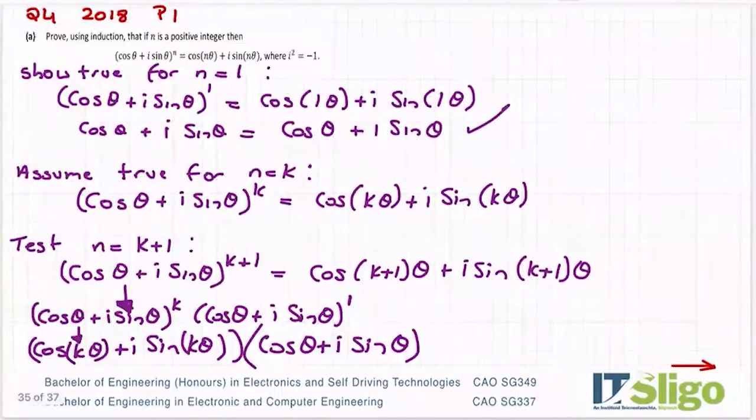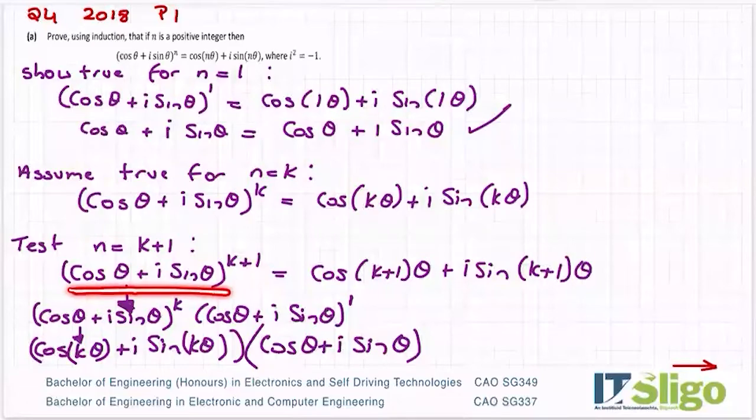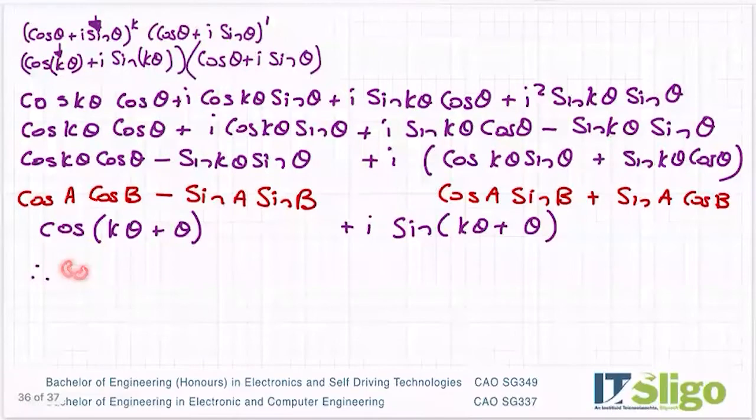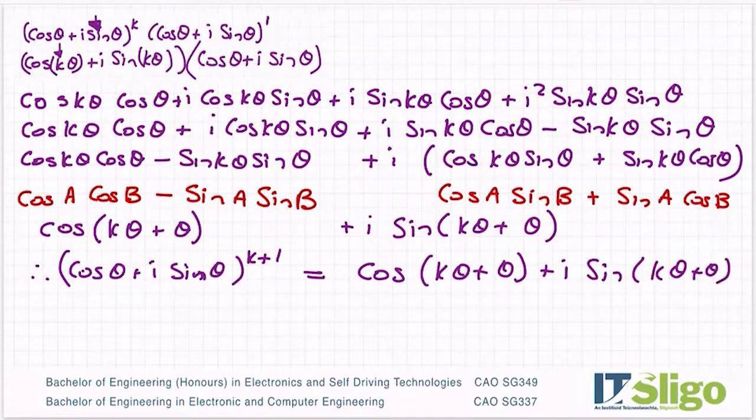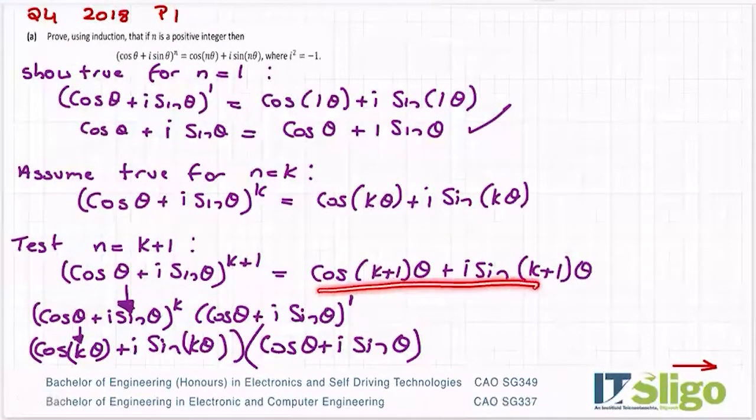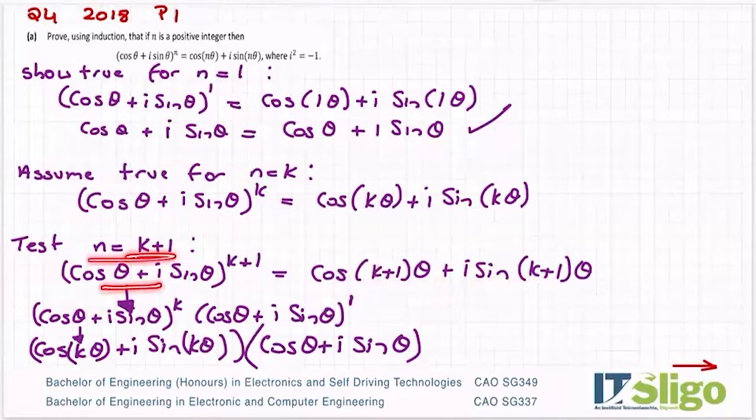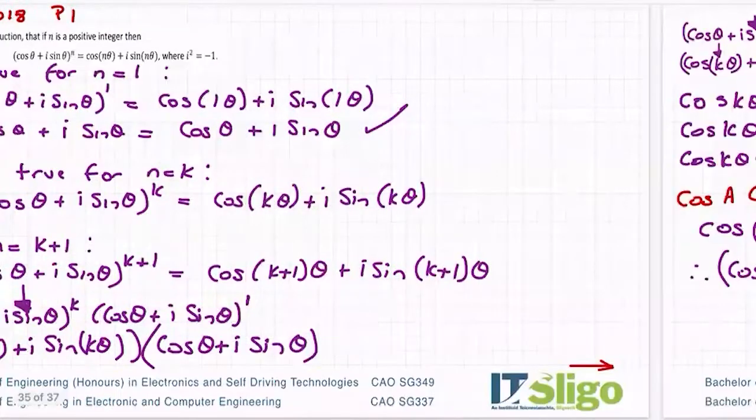So to summarize, I am writing cos of theta plus I sine theta to the power of K plus one. I am saying that can be written as cos of K theta plus theta plus I sine K theta plus theta. That's what I expanded out and this is where I'm at. So what you do now is you go back and you look at, well, how do you want it to look?